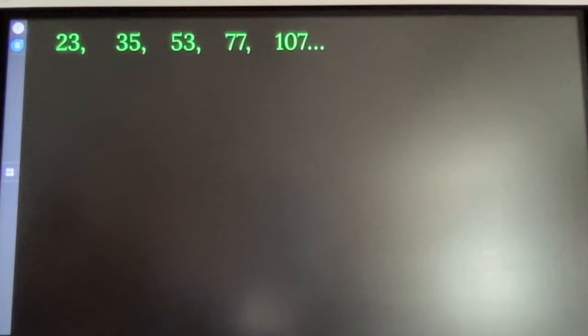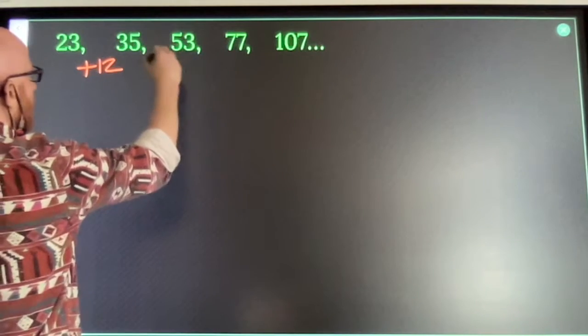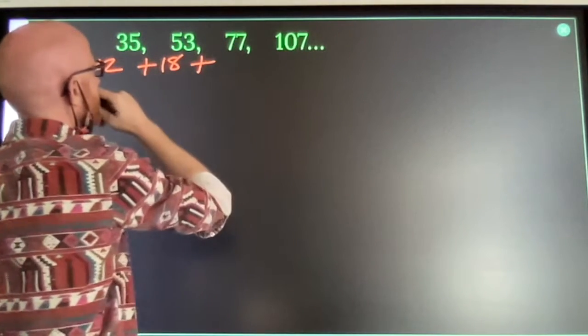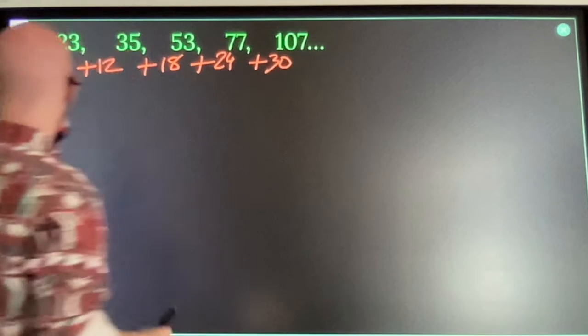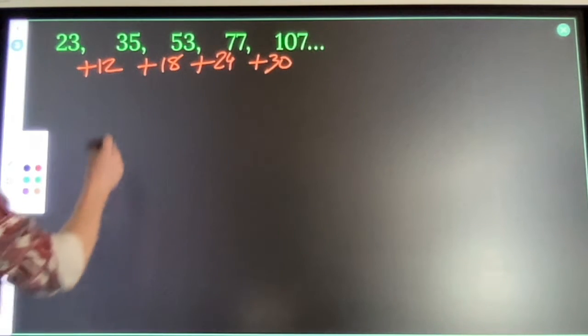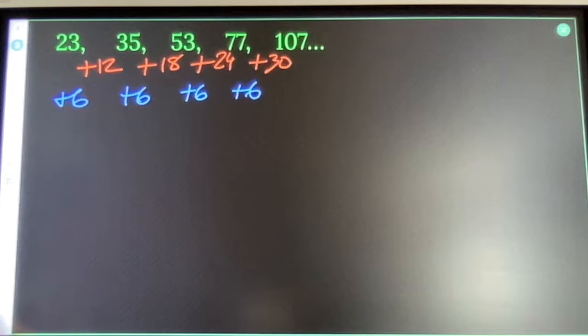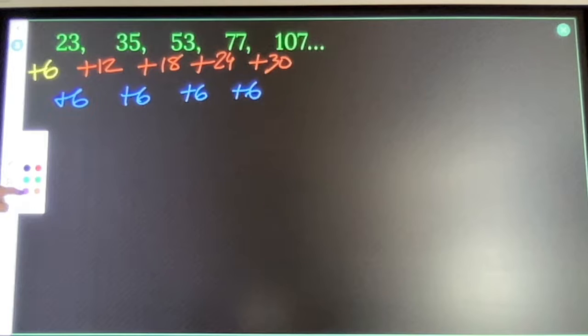Last one on the page. Once again. 12 plus 18 plus 24 plus 30. Second difference is 6. What did I add before I added 12? I added 6. Ironically, what number came before the 23 then? That should be a 17. I've got 17 extras.